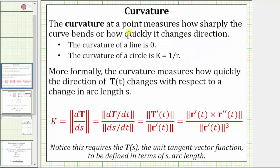The curvature at a point measures how sharply the curve bends, or how quickly it changes direction. The curvature of a line is zero, and the curvature of a circle is equal to the reciprocal of the radius. When we find the curvature of a space curve given by a vector function, we use a general formula, but because in our case we have a function of x which gives us a plane curve, we can simplify this formula.